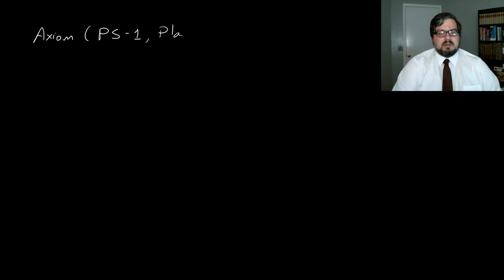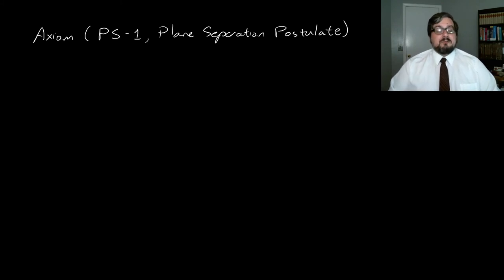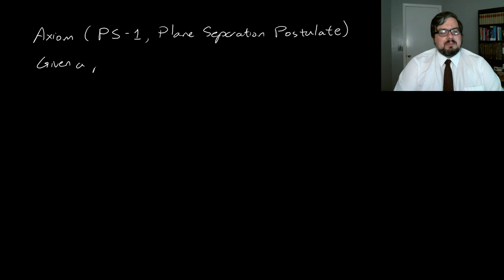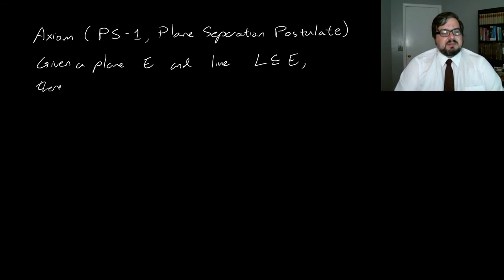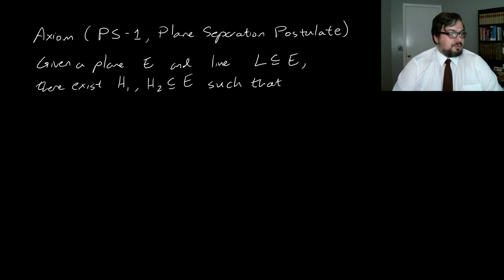We're going to take an axiom called PS1, the plane separation postulate — postulate is just a synonym for axiom. It says the following: given a plane E and a line L that's a subset of E, there exist subsets H1 and H2, subsets of E, such that four things happen.